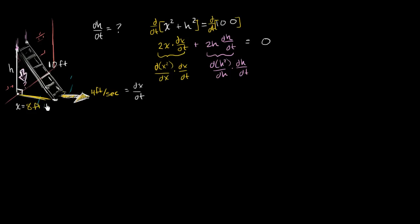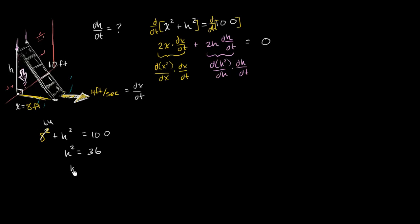Do we know what h is when x equals 8 feet? We can figure it out using the Pythagorean theorem again. We get 8² + h² = 100. So 64 + h² = 100. Subtract 64 from both sides: h² = 36. Take the positive square root — a negative square root doesn't make sense because then the ladder would be somehow underground — so h = 6. Now we know x = 8, dx/dt = 4 feet per second, and h = 6, so we can solve for dh/dt.